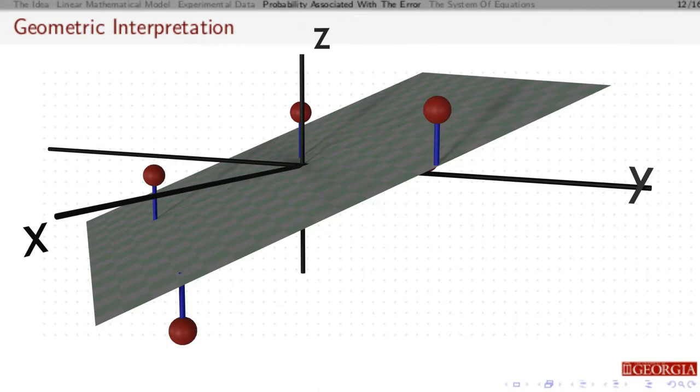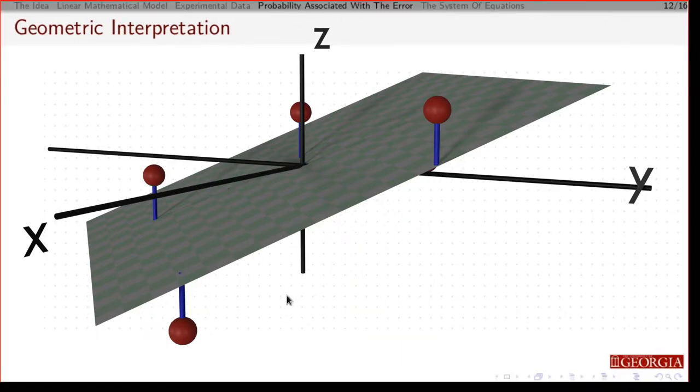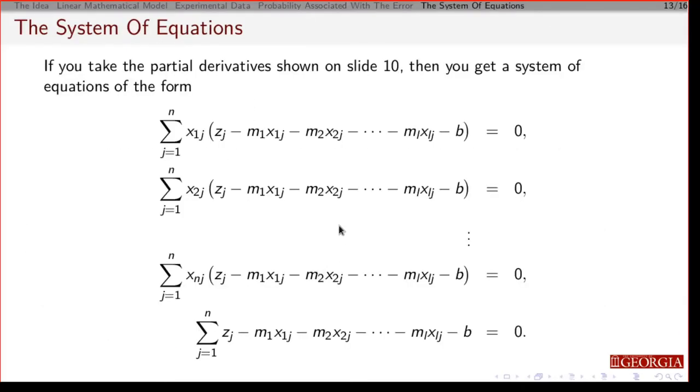All right, so now going back to that situation where we had the derivatives. So I had the derivative of the log of the probability with respect to the first slope. This would be the equation I get when I go through and do that.